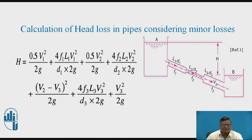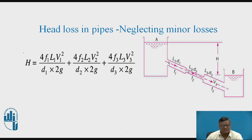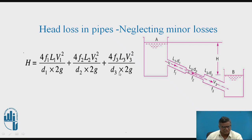If we neglect minor losses because they are of lesser significance and lesser value, removing them leaves only the major losses. Corresponding to the three different sections, the equation becomes: H = 4f₁L₁V₁²/2gD₁ + 4f₂L₂V₂²/2gD₂ + 4f₃L₃V₃²/2gD₃.